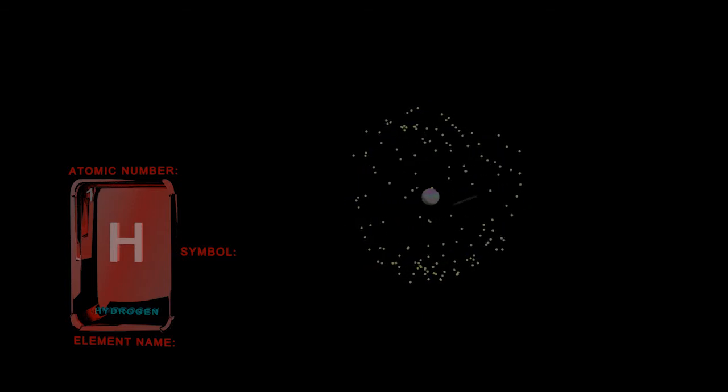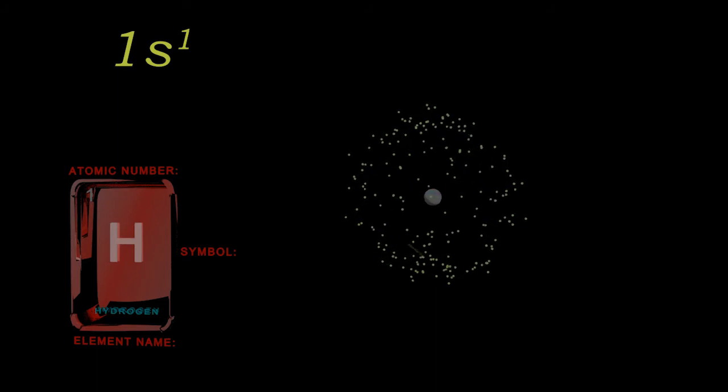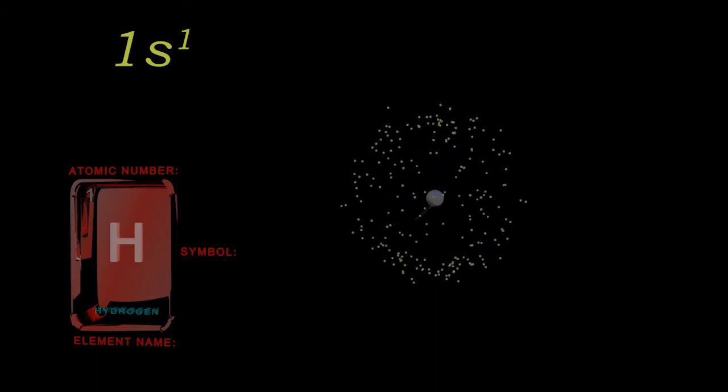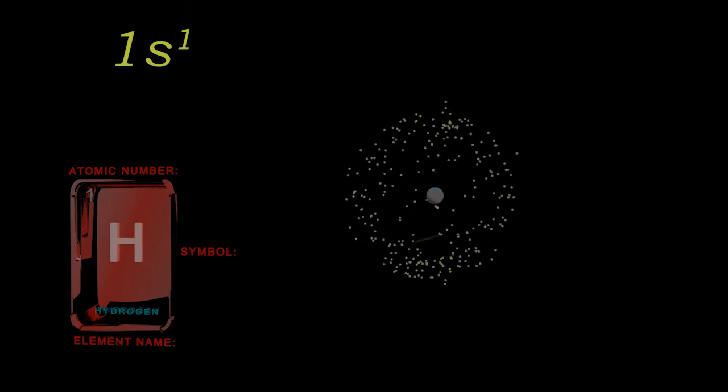The orbital is spherical. We call this orbital 1s. The 1 is for the first energy level. And while the s really stands for sharp, to help us remember the shape, for now let's use the s for spherical.